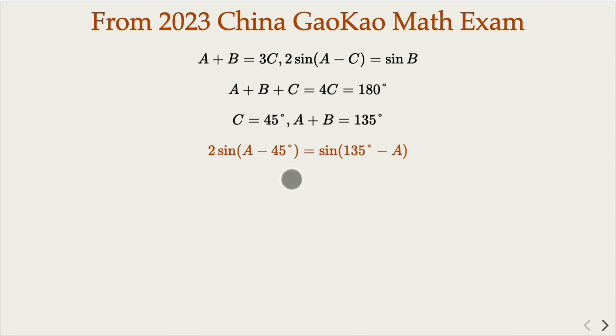From this point, you can use the trig identity of sine alpha minus beta. We know that sine alpha minus beta equals sine alpha cosine beta minus cosine alpha sine beta. Let's apply this formula on both sides.